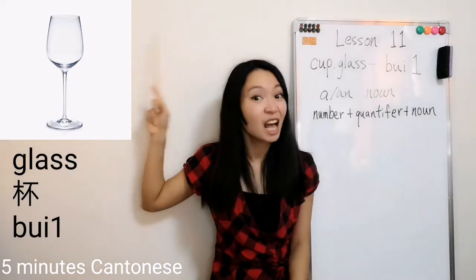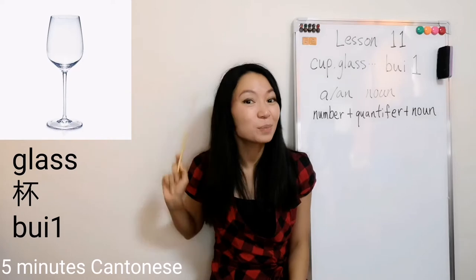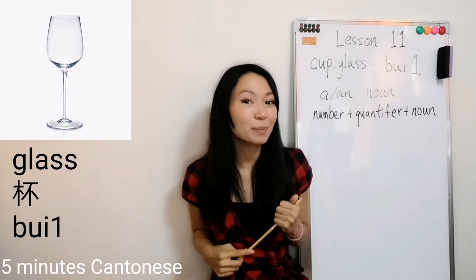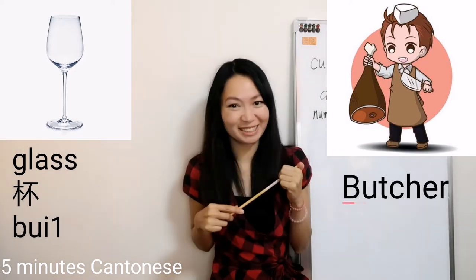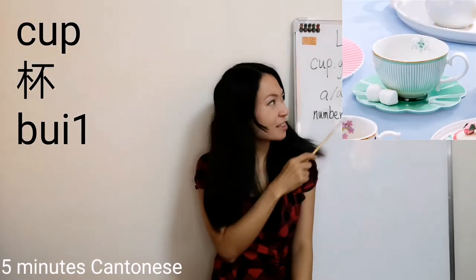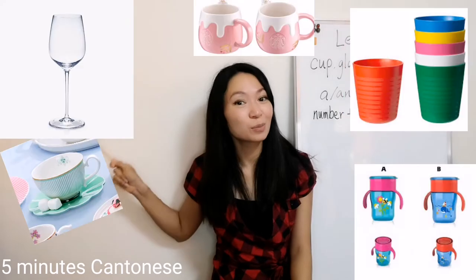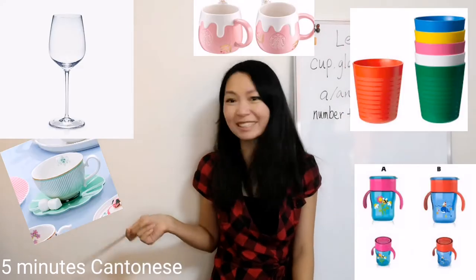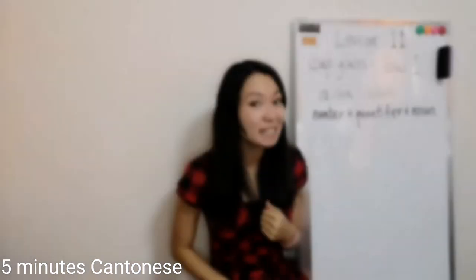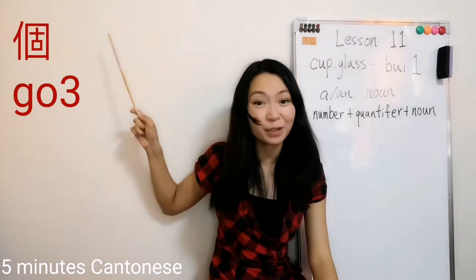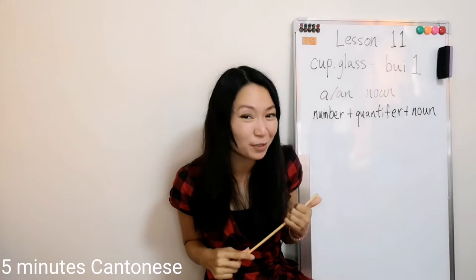First of all, what is this? This is a glass. 這是杯. To help you memorize it easier — 杯. How about that one? That is a cup. 果個係杯. All of these are 杯. 這些是杯. From now on, instead of using our favorite quantifier 個, we'll start to learn some new quantifiers.